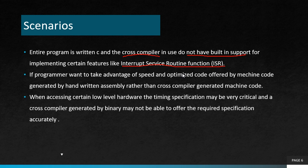Another scenario is when we have to incorporate assembly language in a high level language. As you know, assembly language is close to machine language, which is the language the machine understands. Assembly language is closer to machine language than high level language, so it has an advantage of speed and its code is more optimized. If you want to use these advantages of speed and optimization, we can incorporate assembly language in our high level language.